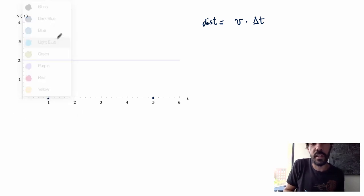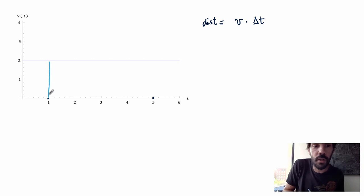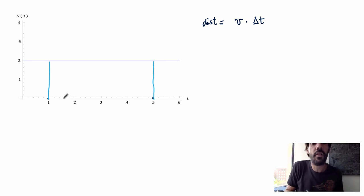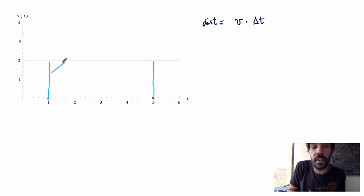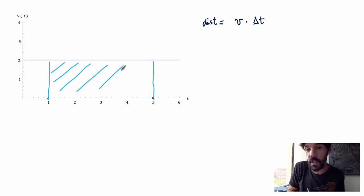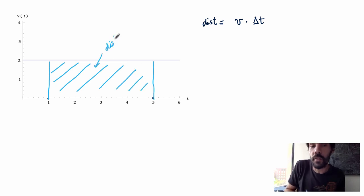There's something quite interesting to notice here: this product has a nice geometric interpretation. If I draw vertical lines over the endpoints of my time interval, the length of the horizontal edge of my rectangle is just the time interval, while the length of the vertical edge is just the constant velocity. So this product is really calculating the area under the graph of my velocity function. The distance covered over this time interval is the same as the area under the graph.